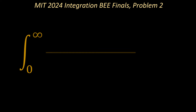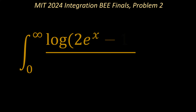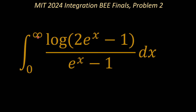This problem is the integral from x equals 0 to x equals infinity of the natural logarithm of 2e^x minus 1, over e^x minus 1. This is a very hard problem, but there are a number of tricks that can be used, and we will show you one of those tricks.